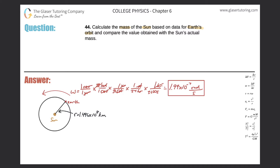Now we set up our formulas. We have two objects exerting gravitational force on each other. The gravitational force between them is F = G · M_earth · M_sun / r². We're looking for the mass of the sun, and we want the mass of the Earth to cancel. The centripetal force keeping Earth in orbit is provided by gravity.